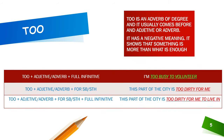The first structure is: too plus adjective or adverb plus full infinitive. The example is: I'm too busy to volunteer. The next one is: too plus adjective or adverb plus for somebody or something. The example is: this part of the city is too dirty for me. The third one is: too plus adjective or adverb plus for somebody or something plus full infinitive. Example: this part of the city is too dirty for me to live in.